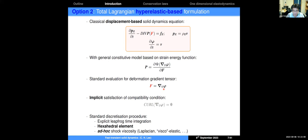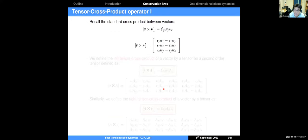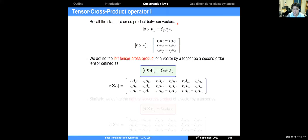Before proposing a new formalism addressing these shortcomings, let me introduce a new algebraic tool that will be heavily used throughout this lecture: the tensor cross-product, which is an extension of the standard cross-product. Recall that for two vectors v and w, the standard cross-product is well-known. Now, the question is: what if I give you a vector and a second-order tensor and want to take a cross-product? We introduce a new notation — a bold cross — which we call the tensor cross-product.